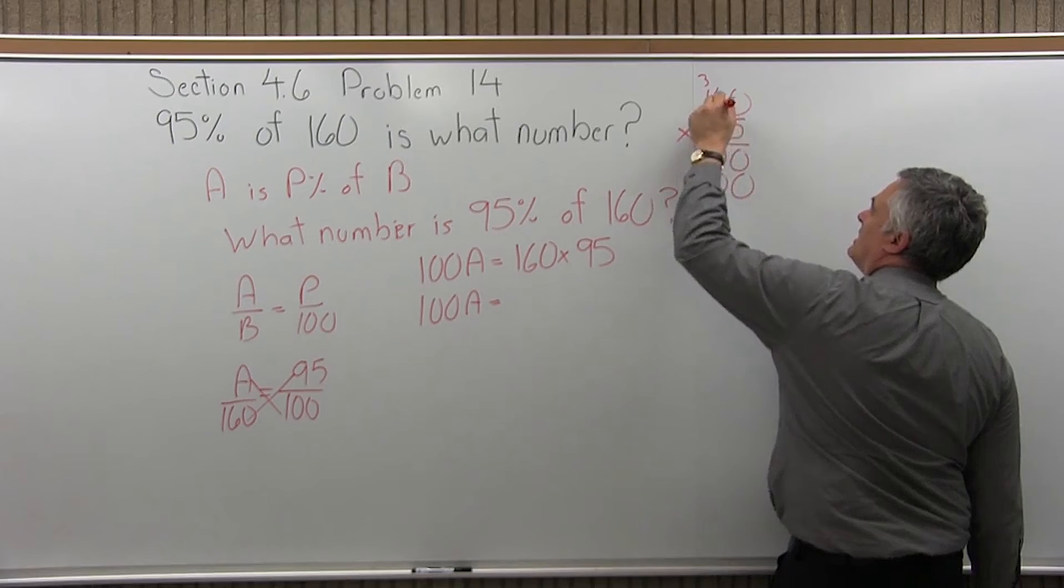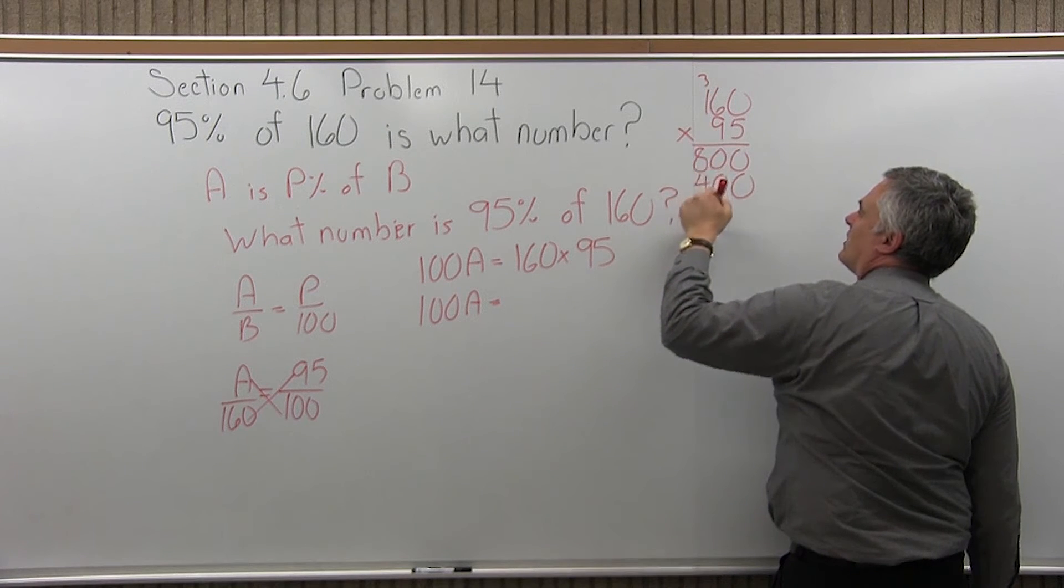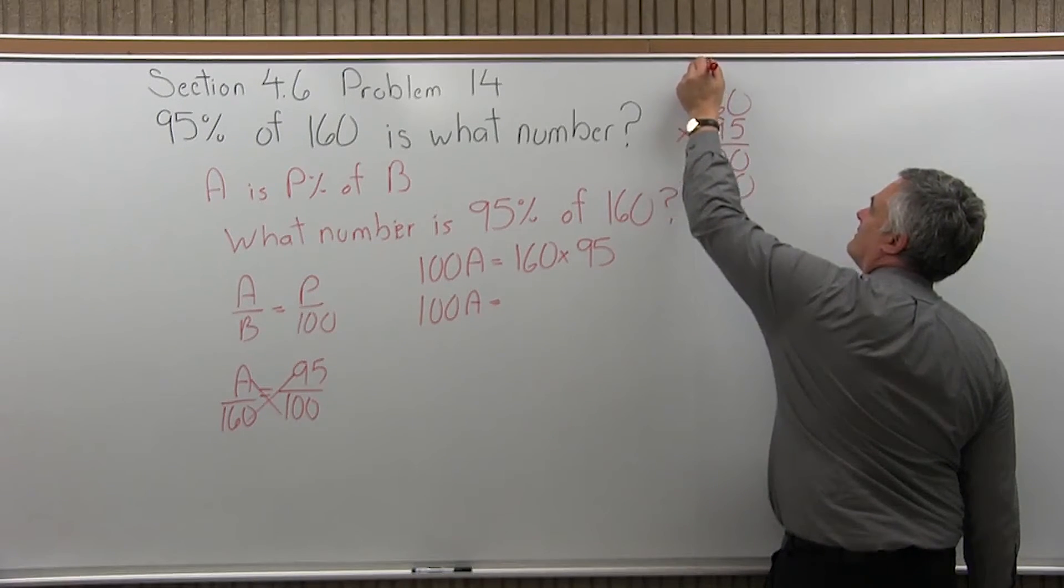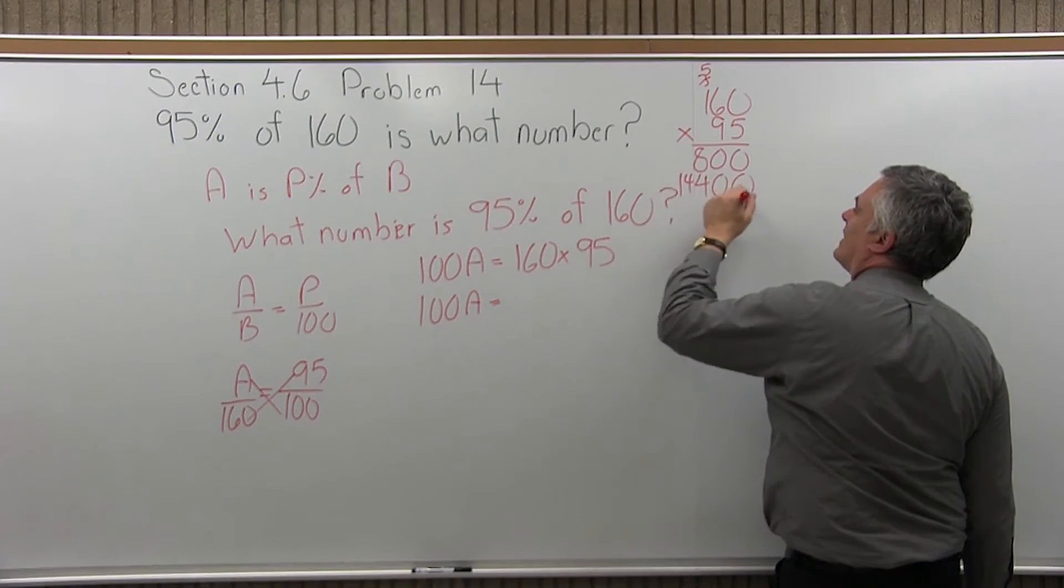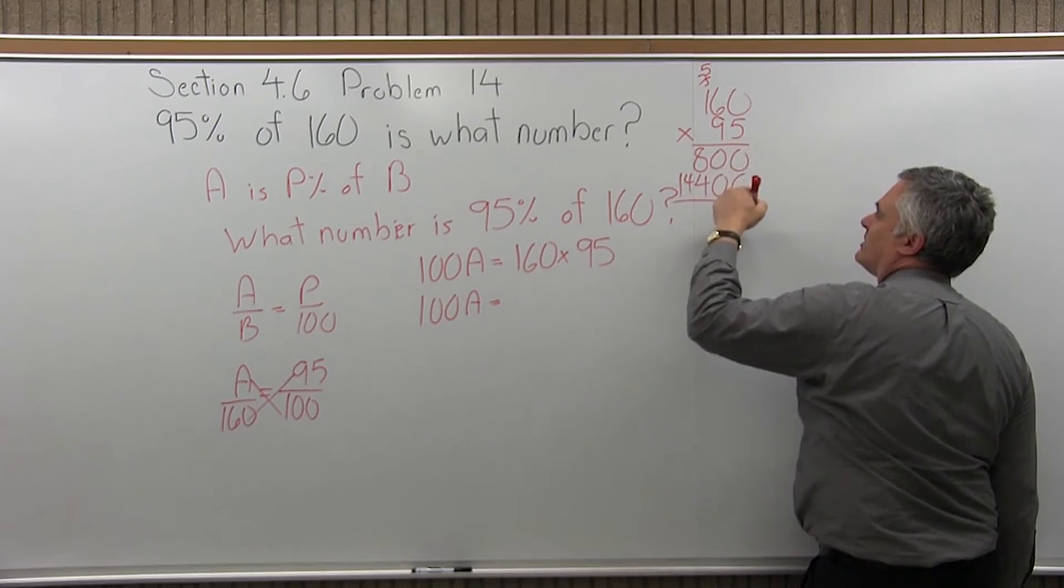9 times 0 is 0. 9 times 6 is 54. Write the 4, carry the 5. 9 times 1 is 9, plus the 5 more that we carried. 9 and 5 more is 14. Add what's left.